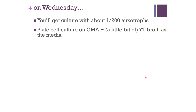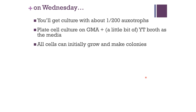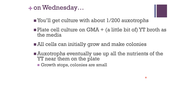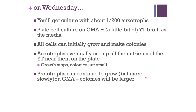On the day of the experiment, you'll receive a culture with one auxotroph per 200 bacteria — a very rare mutation frequency. You're going to plate that culture on GMA (glucose minimal salt agar), but with a very thin layer of YTB (yeast tryptone broth) on top. Both wild-type prototrophs and auxotrophic mutants will initially grow using nutrients from the thin YTB layer. Eventually, those YTB nutrients will be depleted, and auxotrophs will no longer be able to grow, resulting in very small colonies. Prototrophs will continue growing using glucose and salts from the GMA media and will form larger colonies.